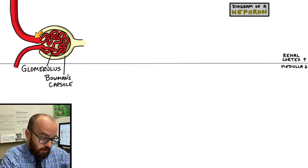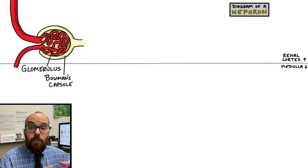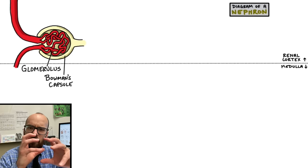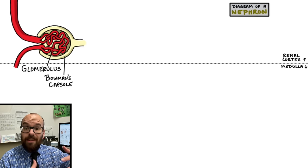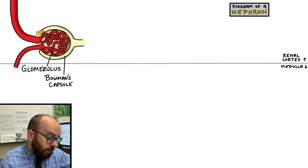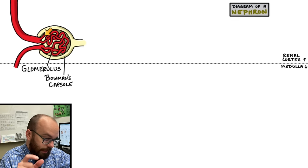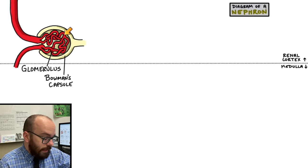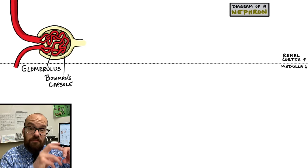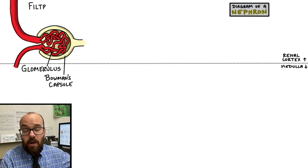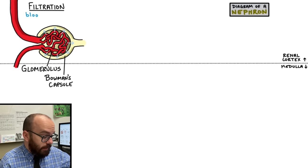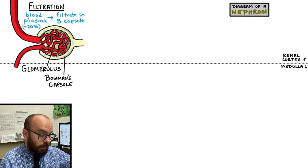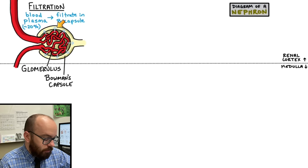The branches of the glomerulus are a lot thinner than the artery coming in. Imagine trying to force a bunch of fluid in a large vessel into a thinner or smaller vessel — that's going to greatly increase the pressure. That increased pressure from forcing a lot of fluid into tiny little vessels is going to cause a lot of that fluid to leak out of the glomerulus into the Bowman's capsule. About 20% of the blood plasma that comes through will exit the glomerulus and go into the Bowman's capsule.